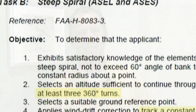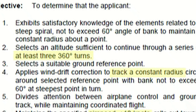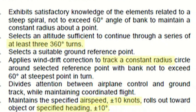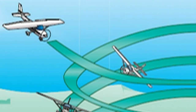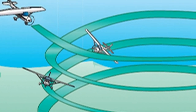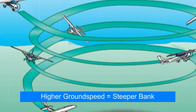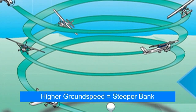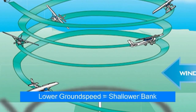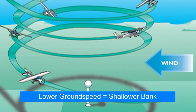It combines a spiraling descent with turns around a point. To perform the maneuver to the commercial PTS standards, we'll want to make a minimum of three 360-degree turns of uniform radius around a ground reference object. We'll need to vary the bank angle to compensate for the effect of wind to stay at the same distance from our ground reference point. When downwind, our increased ground speed requires a steeper bank, and when upwind, our decreased ground speed requires a lesser bank angle to maintain equal radius around the reference point.